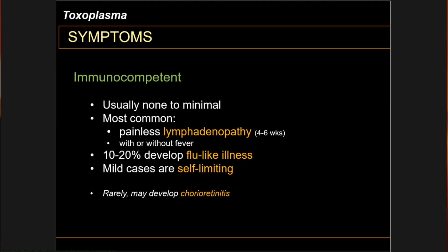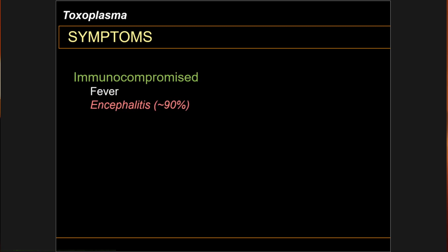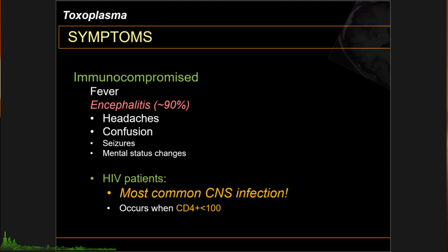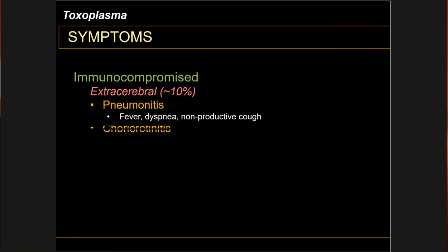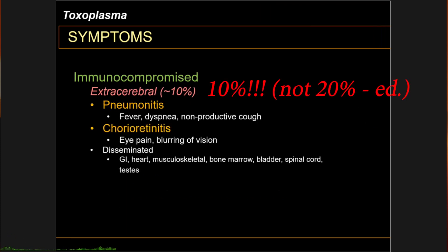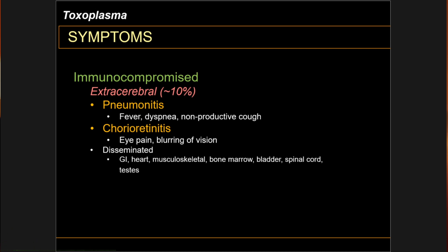The story for immunocompromised infections is rather different. Encephalitis with fever is the most common presentation, and in HIV patients it is the most common central nervous system infection. It occurs when the CD4 counts dip below 100. From the radiographic image, you can appreciate the Toxoplasma cyst growing inside the brain of a patient. About 20% of toxoplasmosis in immunocompromised people manifests as extracerebral disease, involving pneumonitis and chorioretinitis. In extremely rare cases, disseminated infections can also occur.